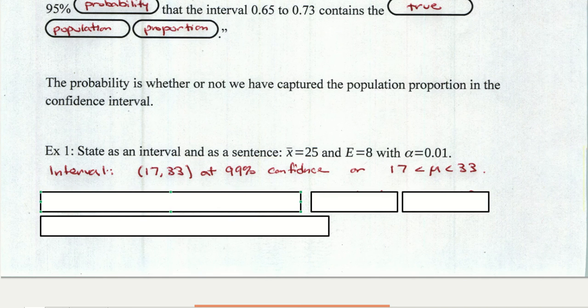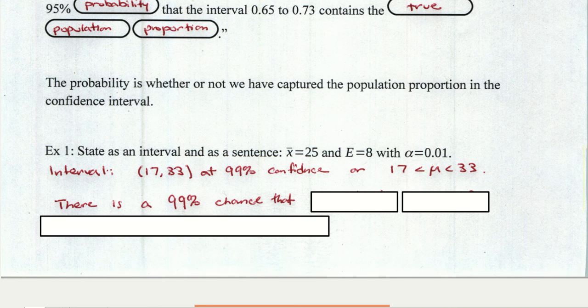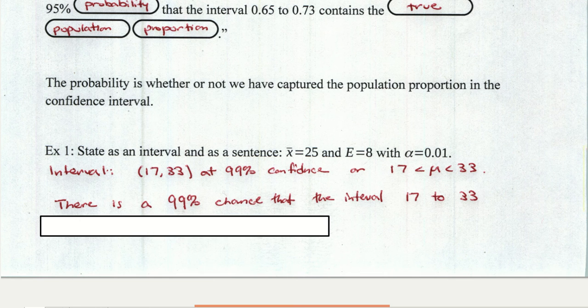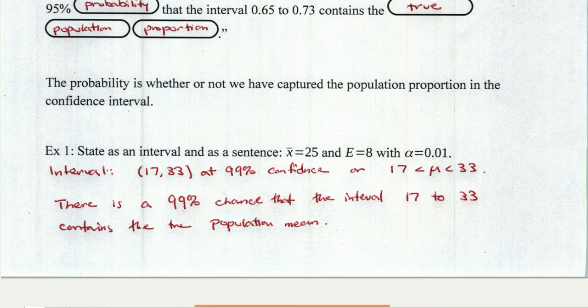Now we're also supposed to say this in words. So we're going to start by saying that there's a 99% chance, we could say probability there, but chance is just as good, that this interval captures the true population mean. So that interval from 17 to 33 actually contains the population mean.